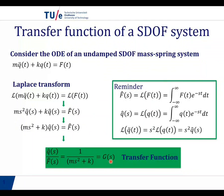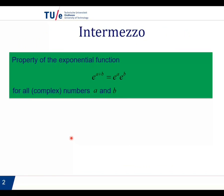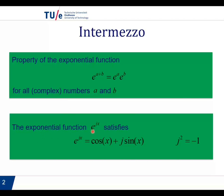Before we go ahead, let's have a short intermezzo to discuss the properties of exponential functions. The first property is that the exponential of a sum — e to the power of a plus b — is equal to the product of e to the power of a times e to the power of b, with a and b complex numbers. The second property is that e to the power of j x, where j squared equals minus 1, can be written as cos x plus j sin x. Keep this in mind when you look at the slides in this lecture.